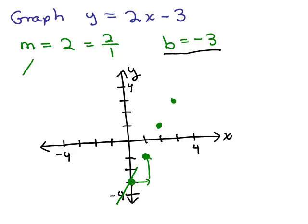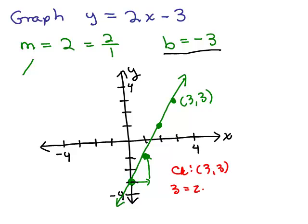The last step is to draw as straight a line as you can — use a ruler if you have graph paper, so it's as accurate as possible. Make sure it's slanting the right direction, which it is — going upward. Let's also check a point on the line. I see the point (3, 3). Plugging into y equals 2x minus 3: 3 equals 2 times 3 minus 3. Yes, that's a quick check to make sure you didn't make a mistake with the slope.